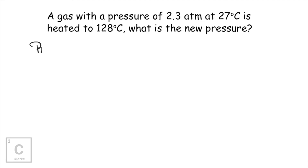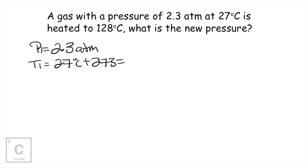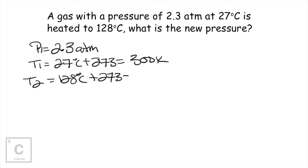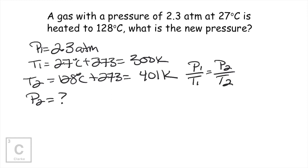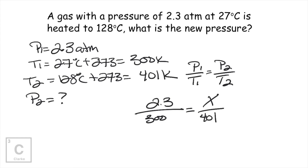Let's identify our variables. We've got pressure one: 2.3 atmospheres. Our temperature one is in Celsius, so we have to add 273 to get Kelvin. 27 plus 273 gives us 300 Kelvins. We heated to a new temperature of 128 degrees Celsius. Again, we add 273 to get Kelvins — I'm getting 401 Kelvins. We must be looking for the new pressure. Since our temperature is increasing, we would expect our pressure to also increase. Pressure one is 2.3 atmospheres, temperature one is 300 Kelvins, pressure two is what we're solving for, and our second temperature is 401 Kelvins.